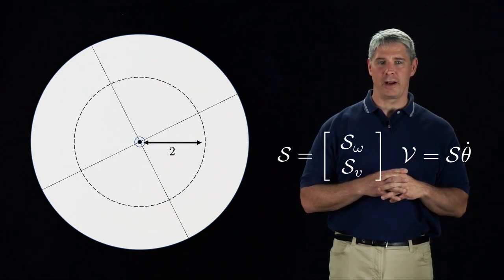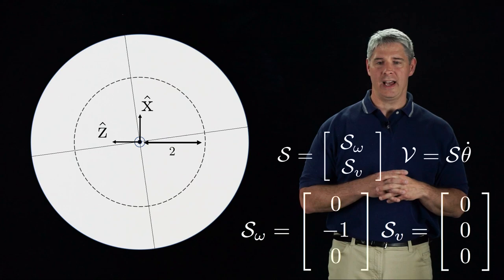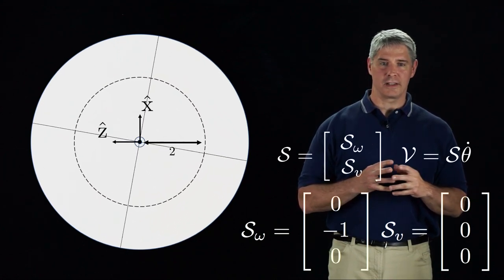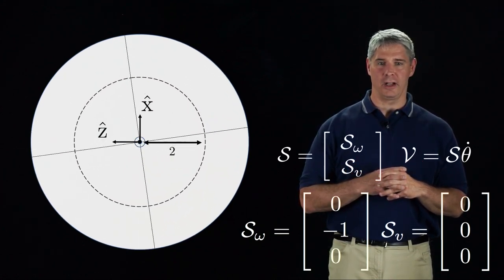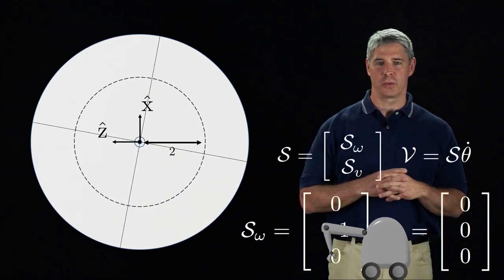Finally, if we choose a reference frame on the screw axis itself, Sv is 0. Because the frame has a different orientation from before, the angular velocity is now one unit in the minus-y direction.